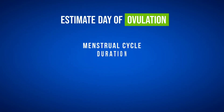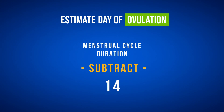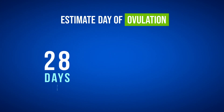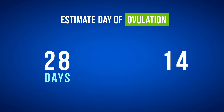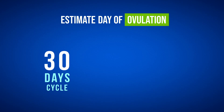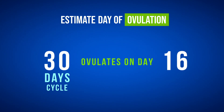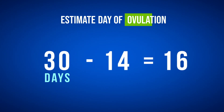On the other hand, the first phase can vary widely, resulting in menstrual cycles that range every 21 to 35 days. To estimate the day of ovulation, you basically take the menstrual cycle duration and subtract 14. For example, a woman with a 28-day cycle ovulates around day 14 — that would be 28 minus 14. A woman with a 30-day cycle ovulates around day 16 — that would be 30 minus 14.